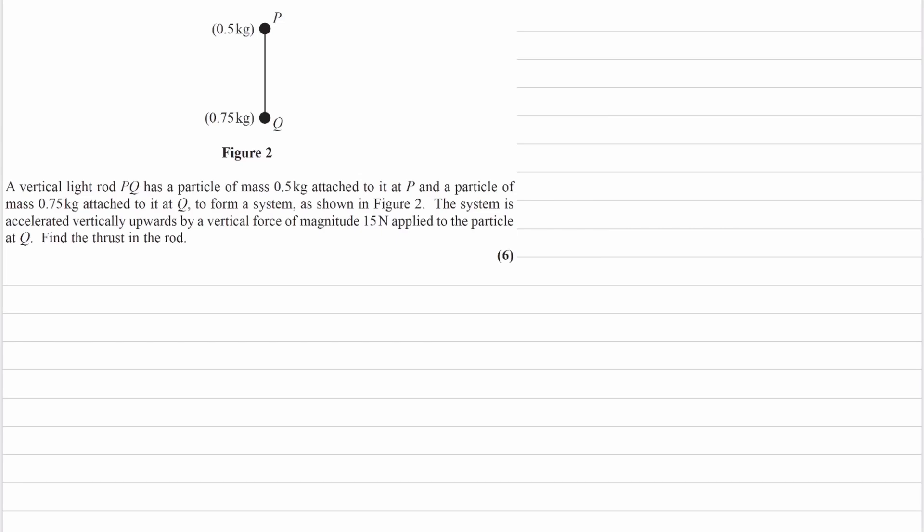We have a vertical light rod PQ with a particle of 0.5 kilograms. Here is the weight force of that mass. We also have a particle at Q attached to it, 0.75 kg, downwards. That forms our system.